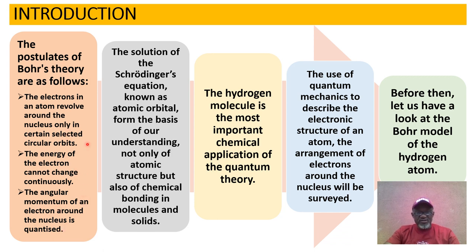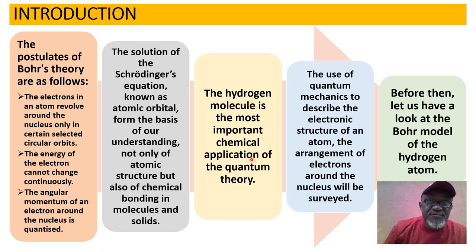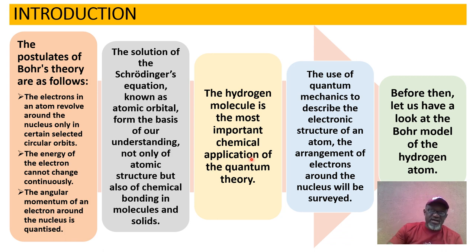So look at these three postulates. We'll also look at what Bohr based this postulate on to calculate the energy of the electron in the hydrogen atom. The solution of the Schrödinger equation, known as atomic orbitals, we're going to meet these atomic orbitals. We're also going to meet Schrödinger's equation — just elementary Schrödinger's equation. The source of the atomic orbital forms the basis of our understanding not only of atomic structure but also of chemical bonding in molecules and solids. The hydrogen atom is the most important chemical application of quantum theory.